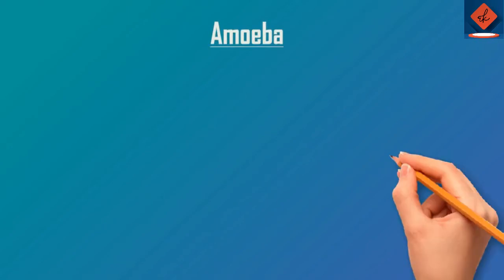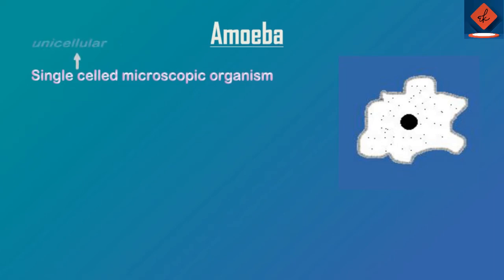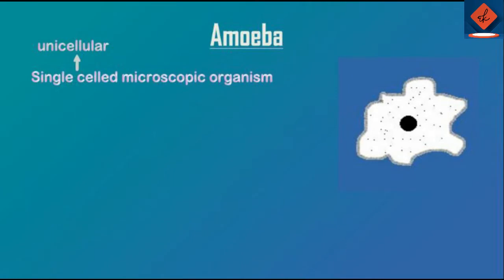In this video we are going to discuss about nutrition in amoeba. Amoeba is a single-celled microscopic organism — unicellular, meaning only one cell is present. Microscopic means it is so small that we cannot see it with our naked eye, so we need to view it through a microscope.